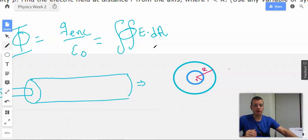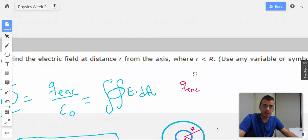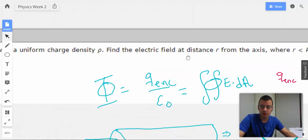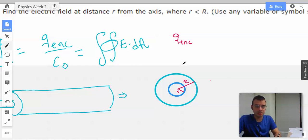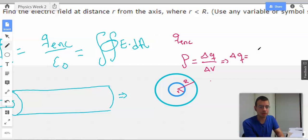So we need to find what q enclosed is going to be. They gave us rho. So rho is charge density, which is like normal density except normal density uses mass. Charge density equals charge. So we're going to use a small amount of charge for a small amount of volume, which means a small amount of charge equals rho times whatever small amount of volume you have. So for q enclosed...